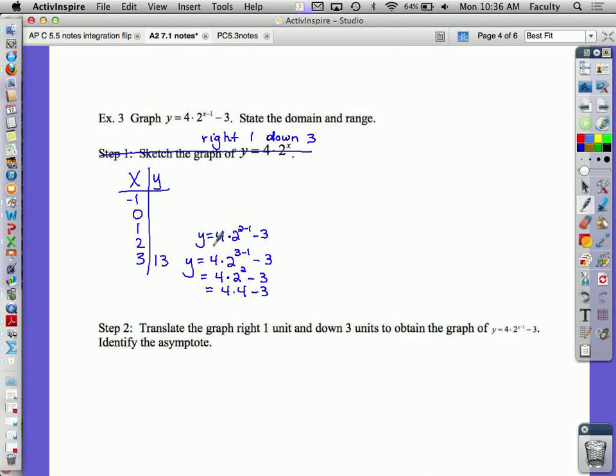Go ahead and fill in the rest of your table. I get y equals four times two to the three minus one minus three. This is four times two squared. Four times four is 16. 16 minus three is 13. That's four times two is eight minus three. I get five. That's two to the zero. So, that's one. Four minus three is one. So, that's four times one half. Four times one over two. That's two minus three is negative one. That's two to the negative two. That's four times one fourth. That's one minus three is negative two.